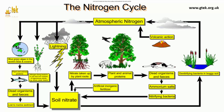Blue-green algae, depicted here, allow plants and animals to get nitrogen as proteins. Then dead organisms and waste are created, and finally it goes to marine sediment. The second stage involves nitrogen-fixing bacteria, from which we get soil nitrate. The third stage is by lightning, which also produces soil nitrate.